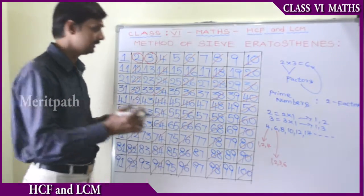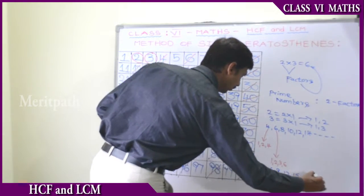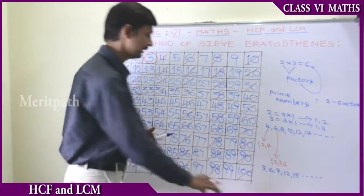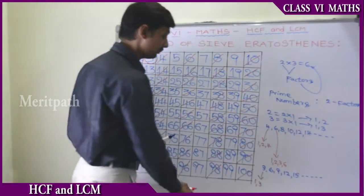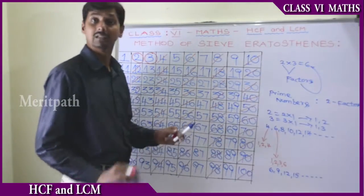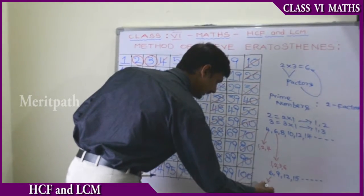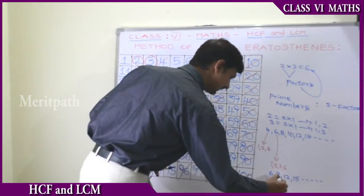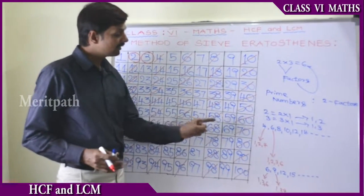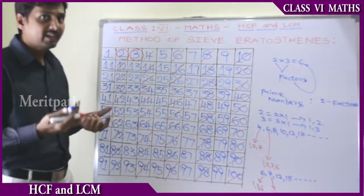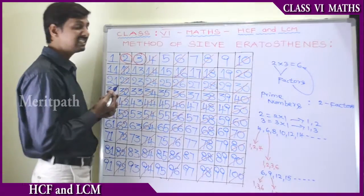Let's see the multiples of 3. If you take multiples of 3, they are 6, 9, 12, 15 and so on. These are the multiples of 3. The factors for 3 are 1 and 3 only, so 3 is a prime number. Let's take only the multiples of 3, not 3 itself. So after 3 — 6 has the factors of 1, 3, and 6 — 3 factors. So all the multiples of 3 have more than 2 factors and are not prime numbers.